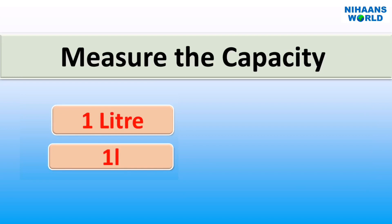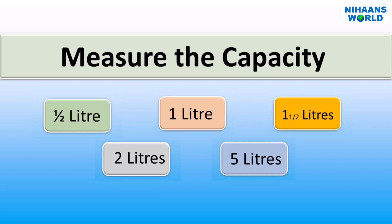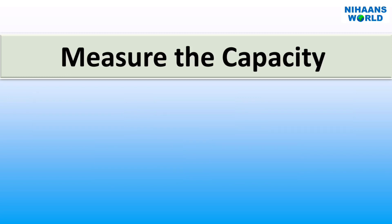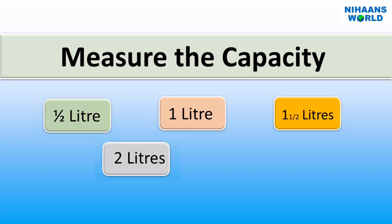One liter is equal to one thousand milliliters. These are certain standard measures used to measure the capacity of a liquid. They are approved by the government: half liter, one liter, one and a half liters, two liters, four liters.